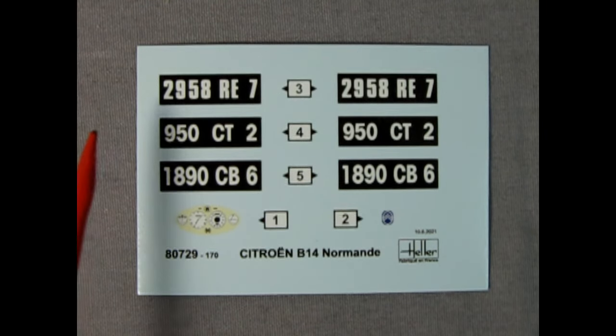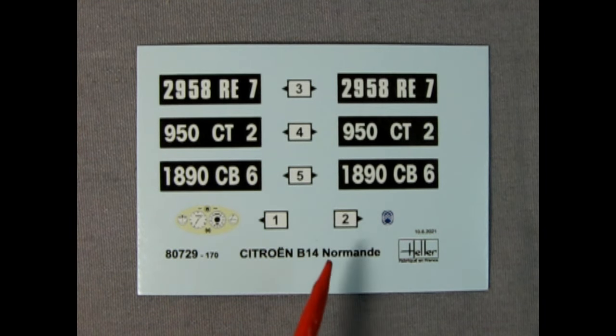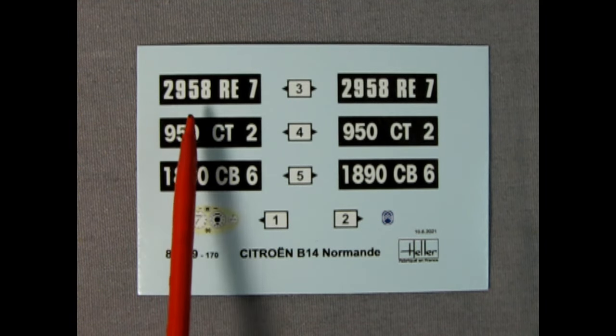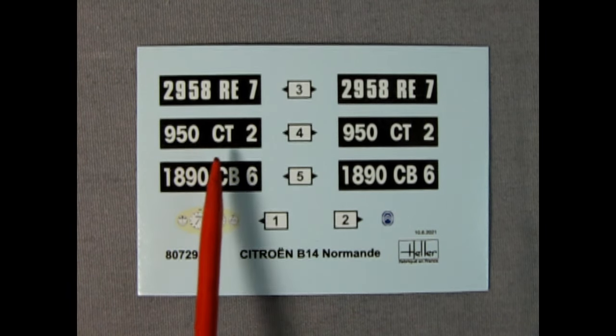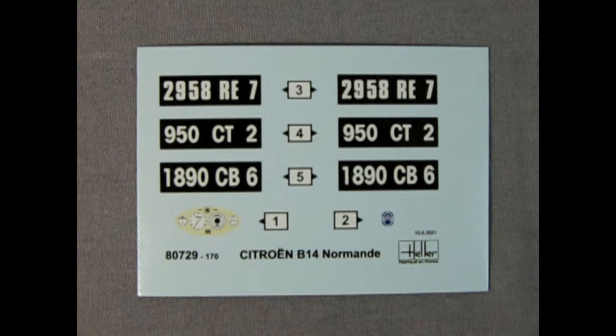The decal sheet includes three license plates, a dashboard instrument cluster and the Citroën logo for the front of the radiator. Our license plates are 2958 RE7, 950 CT2 and 1890 CB6.